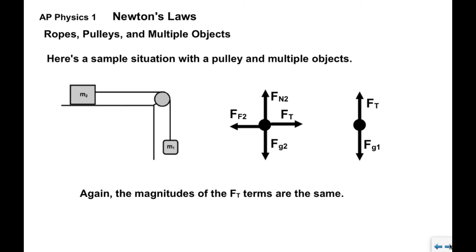When we look at the free body diagrams for M1, all we have is Fg1 pulling down and Ft of the rope pulling up. There is no normal force because it's not on the surface, there's no friction, there is no applied force.